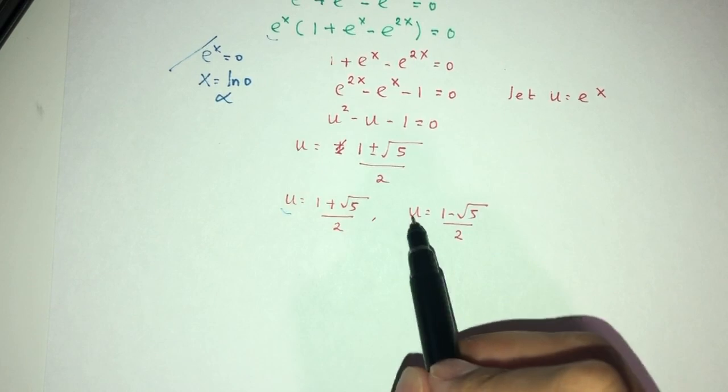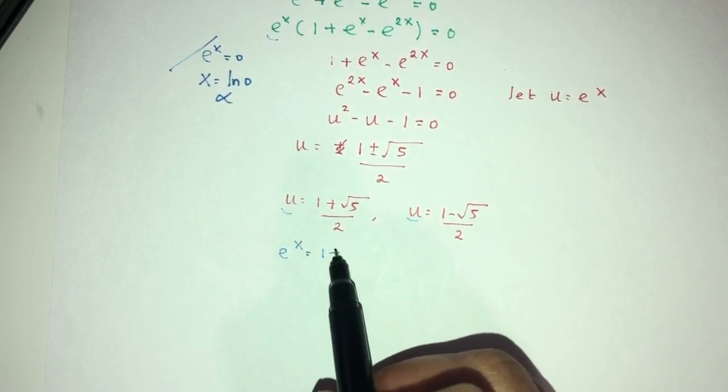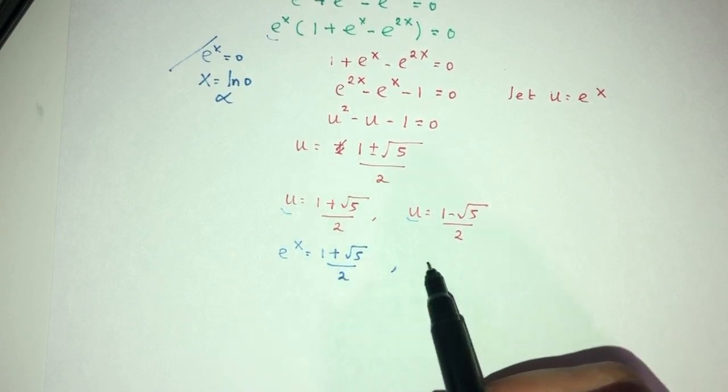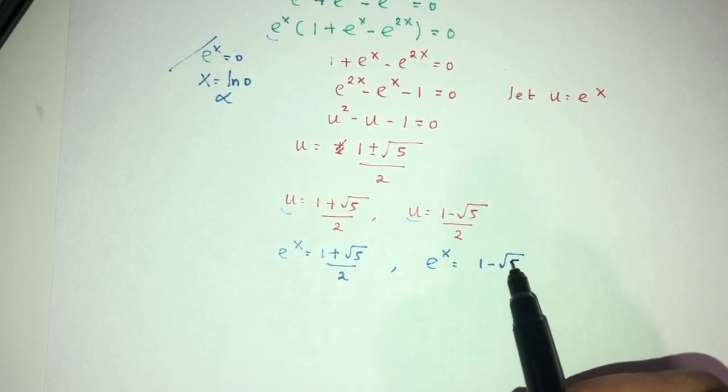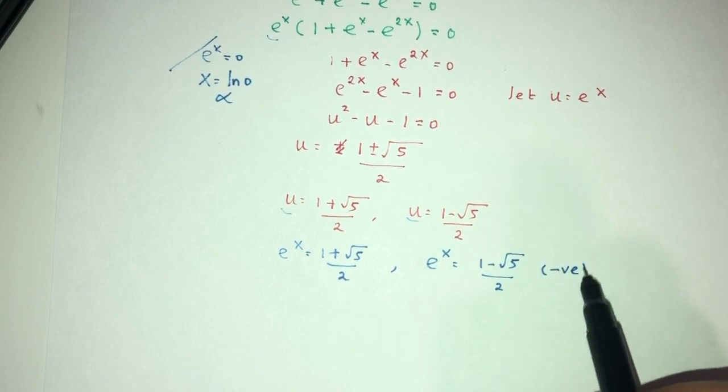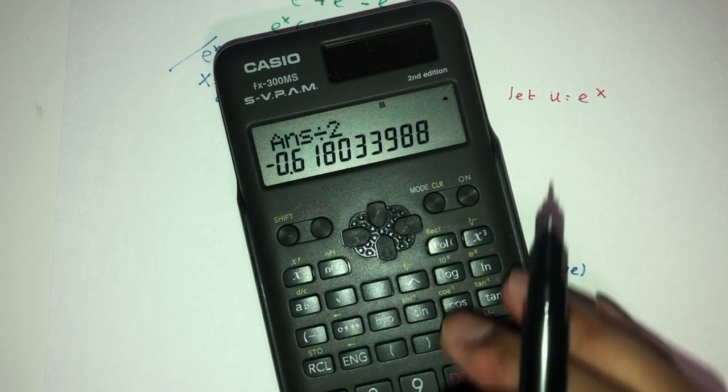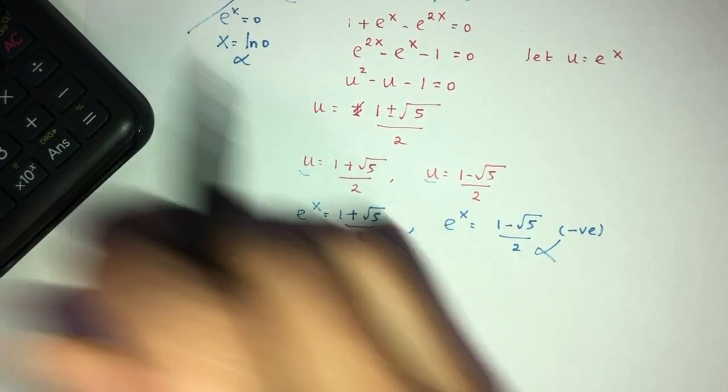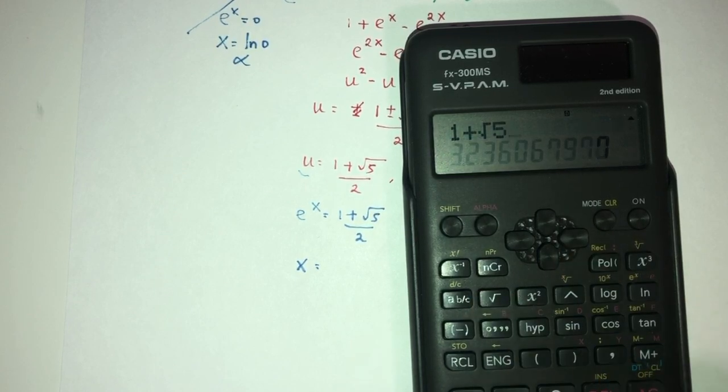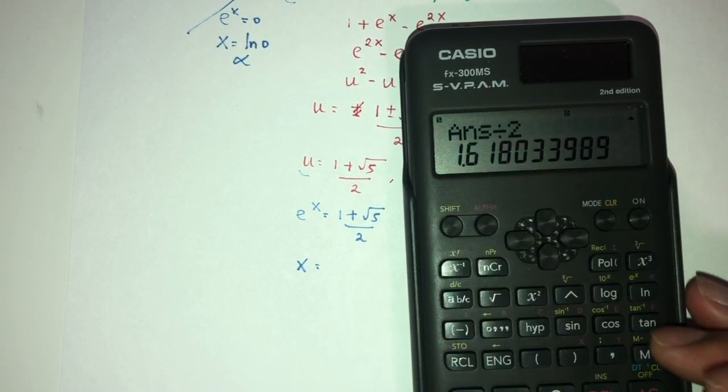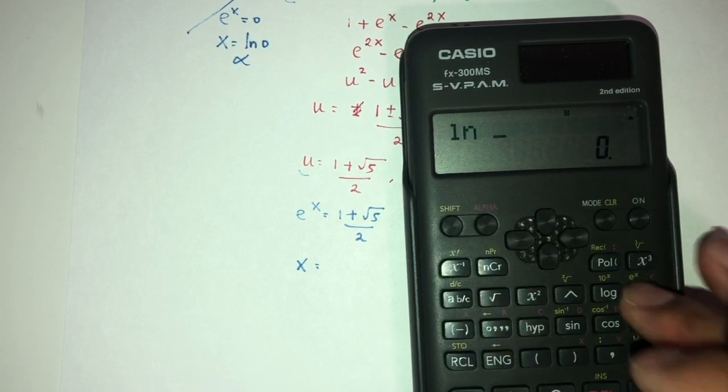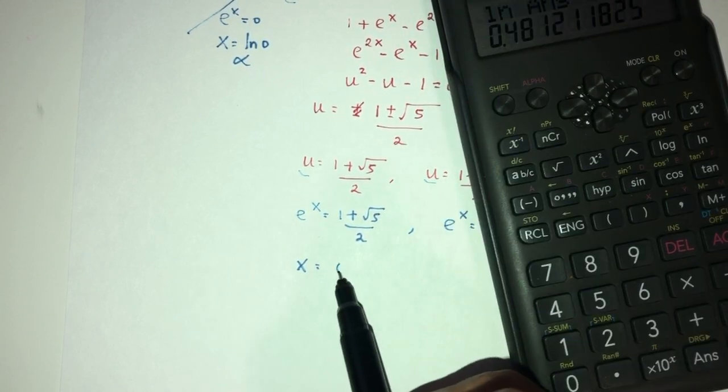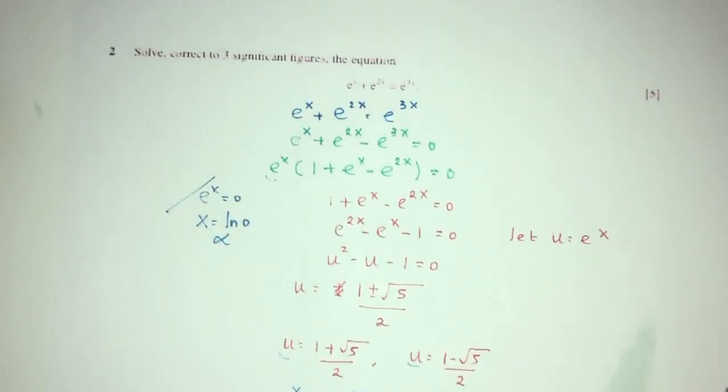Now, u is actually the value of e^x. This one, e^x will be (1 - √5)/2, which will be a negative value. And hence, it will not be good as well. We can check. So, 1 minus root of 5 divided by 2. And ln of this value, it is not good. How about this one? x will be ln of this value. So, (1 + √5)/2. ln of the value, sorry about that. ln of the value will be 0.481. Correct? Your three significant figures. And that will be your question number 2.